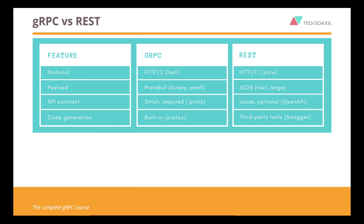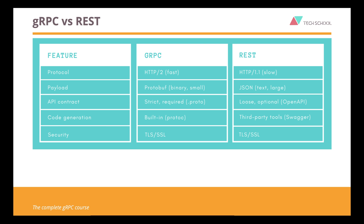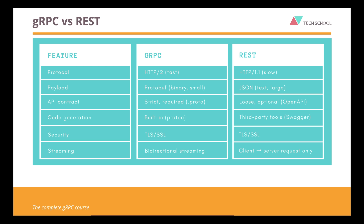Code generation is built-in in gRPC with the help of the protocol buffer compiler, while in REST we must use third-party tools like OpenAPI and Swagger. Both gRPC and REST communications are secured with SSL. Streaming is bidirectional in gRPC, while only one-way requests from client to server in REST.